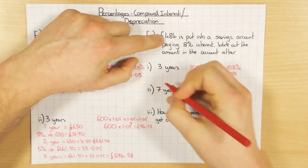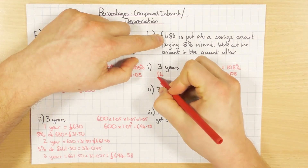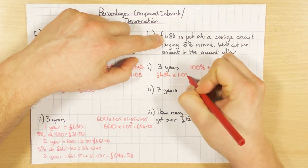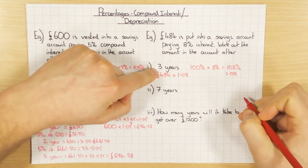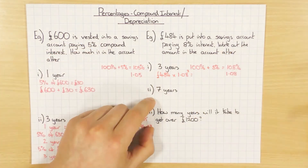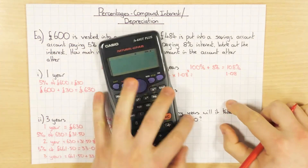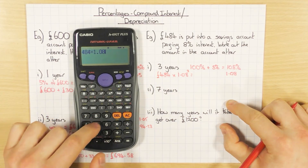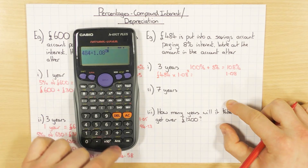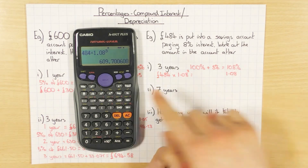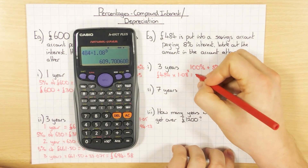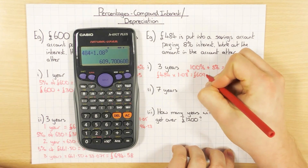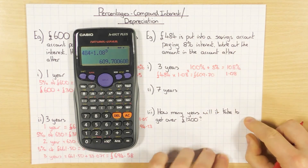So for three years, I just do £484 times by my decimal multiplier 1.08 to the power of 3. Putting that into the calculator: 484 times 1.08 to the power of 3. I round to two decimal places because we're dealing with money, giving £609.70.